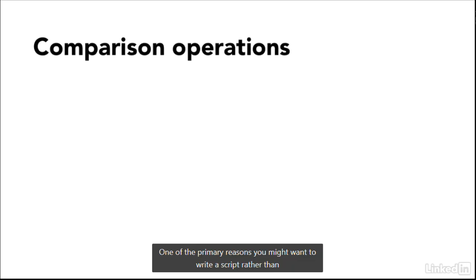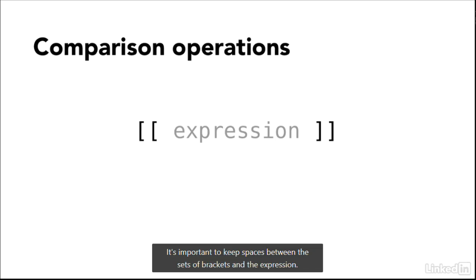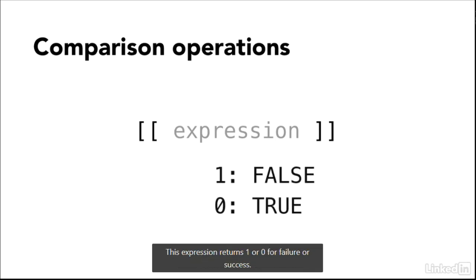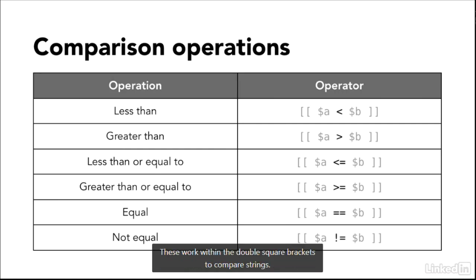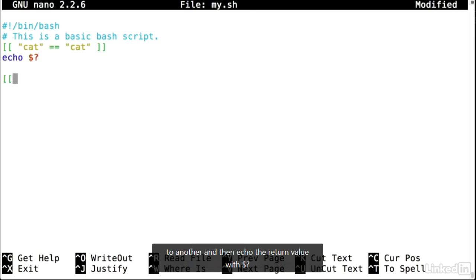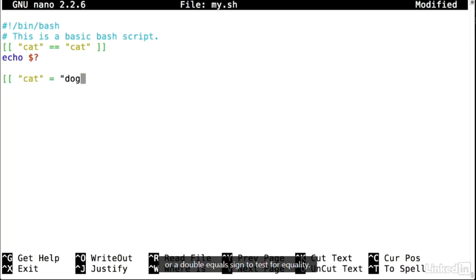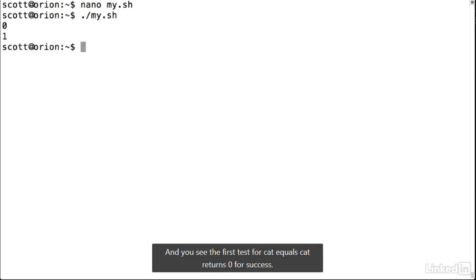One of the primary reasons to write a script is to incorporate logic. Comparisons use double square brackets, a notation borrowed from korn shell, with spaces between the brackets and the expression. The expression returns 0 for success or 1 for failure. Bash supports the standard comparators: less than, greater than, less than or equal to, greater than or equal to, equal, and not equal. These work within double square brackets to compare strings. Testing if 'cat' equals 'cat' returns 0 for success, and 'cat' equals 'dog' returns 1 for failure.